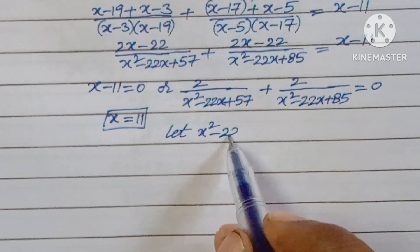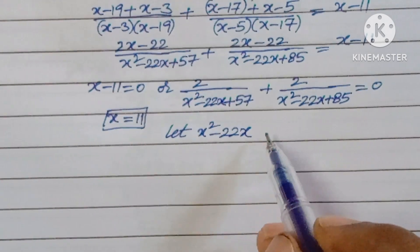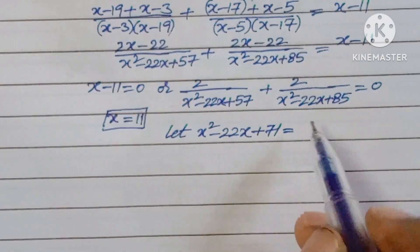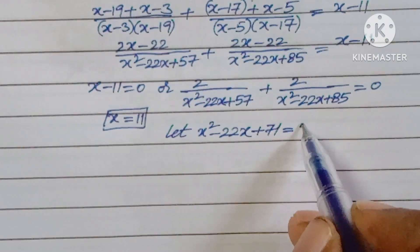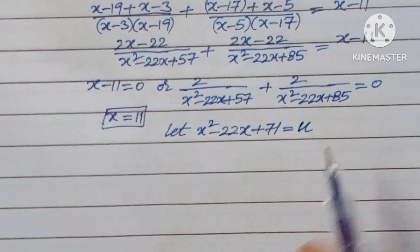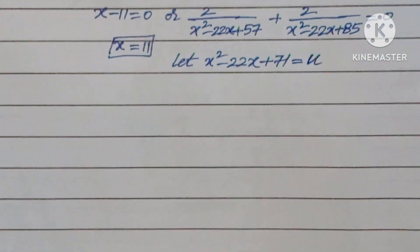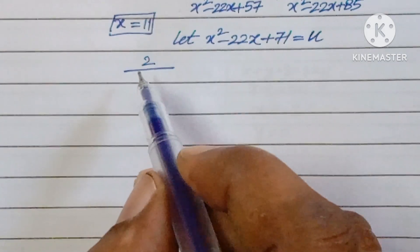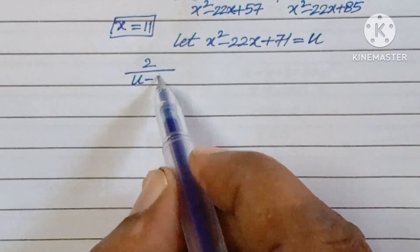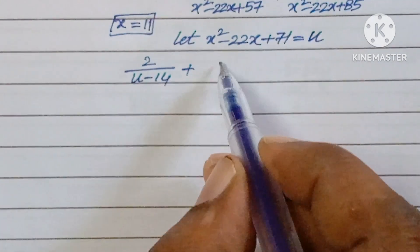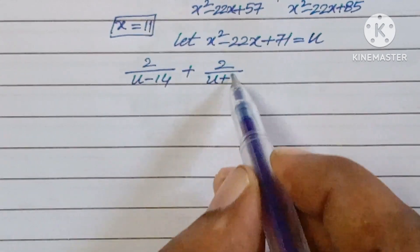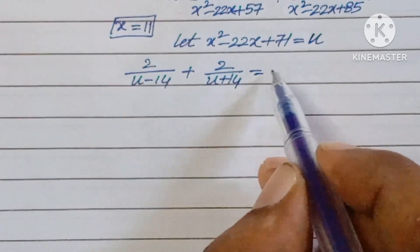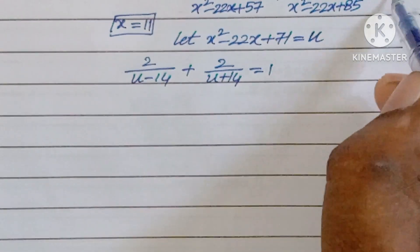Now let u equal x squared minus 22x plus 71. Then x squared minus 22x plus 57 equals u minus 14 and x squared minus 22x plus 85 equals u plus 14. The equation becomes 2 over (u minus 14) plus 2 over (u plus 14) equals 1.